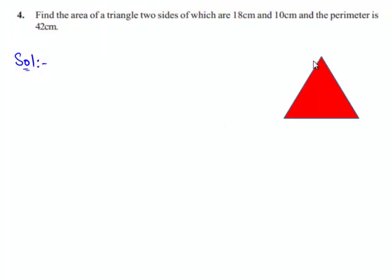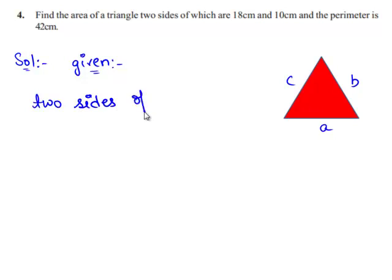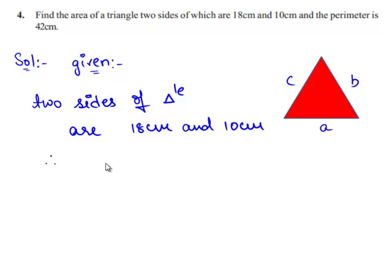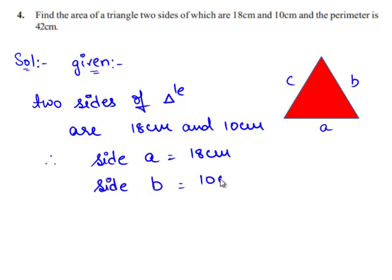So let us consider a triangle. Let its sides be A, B, and C. Given in the question, two sides of the triangle are 18 cm and 10 cm. Therefore, let side A be 18 cm and side B be equal to 10 cm.